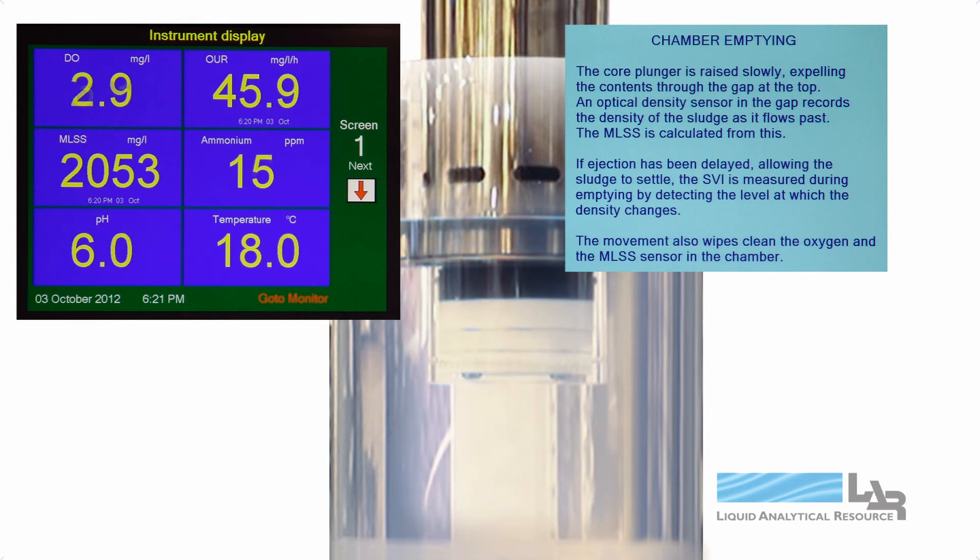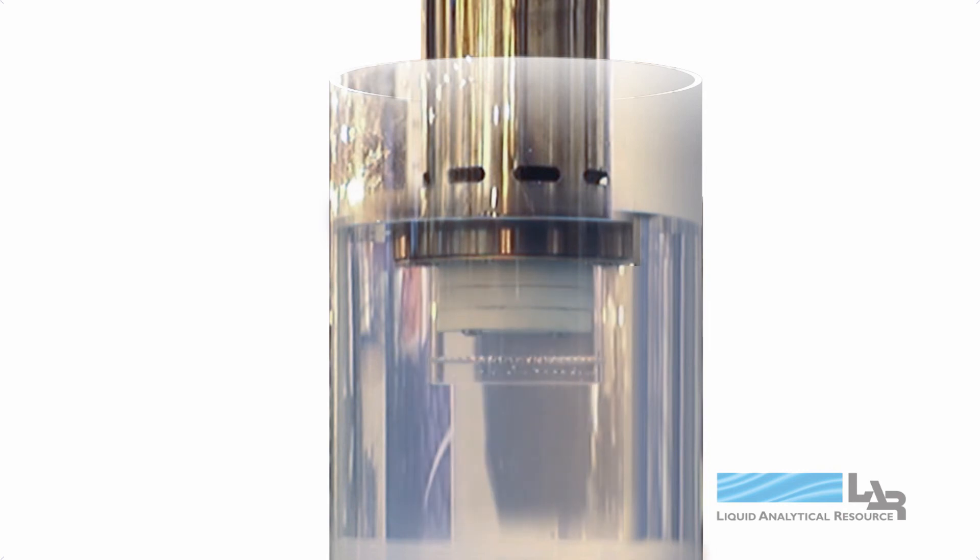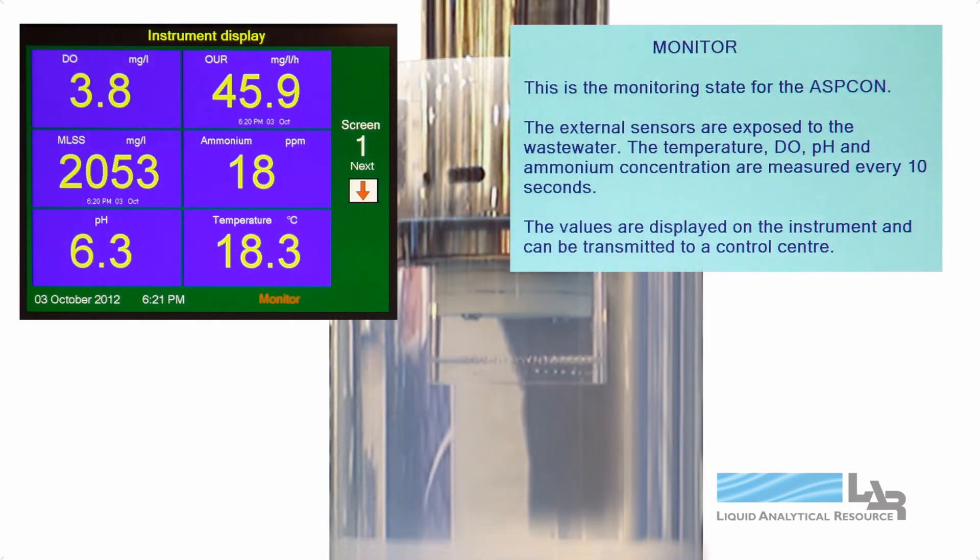If ejection has been delayed, allowing the sludge to settle, the sludge volume index is measured during emptying by detecting the level or density changes. The movement also wipes clean the oxygen and MLSS sensors in the chamber.